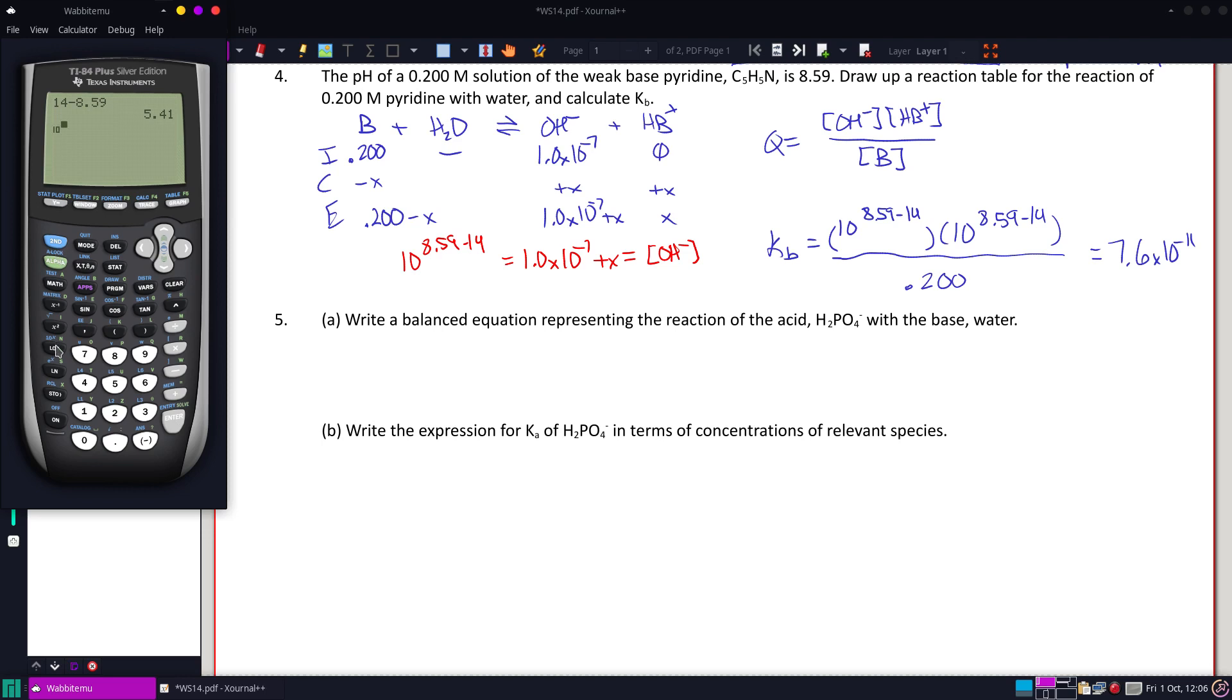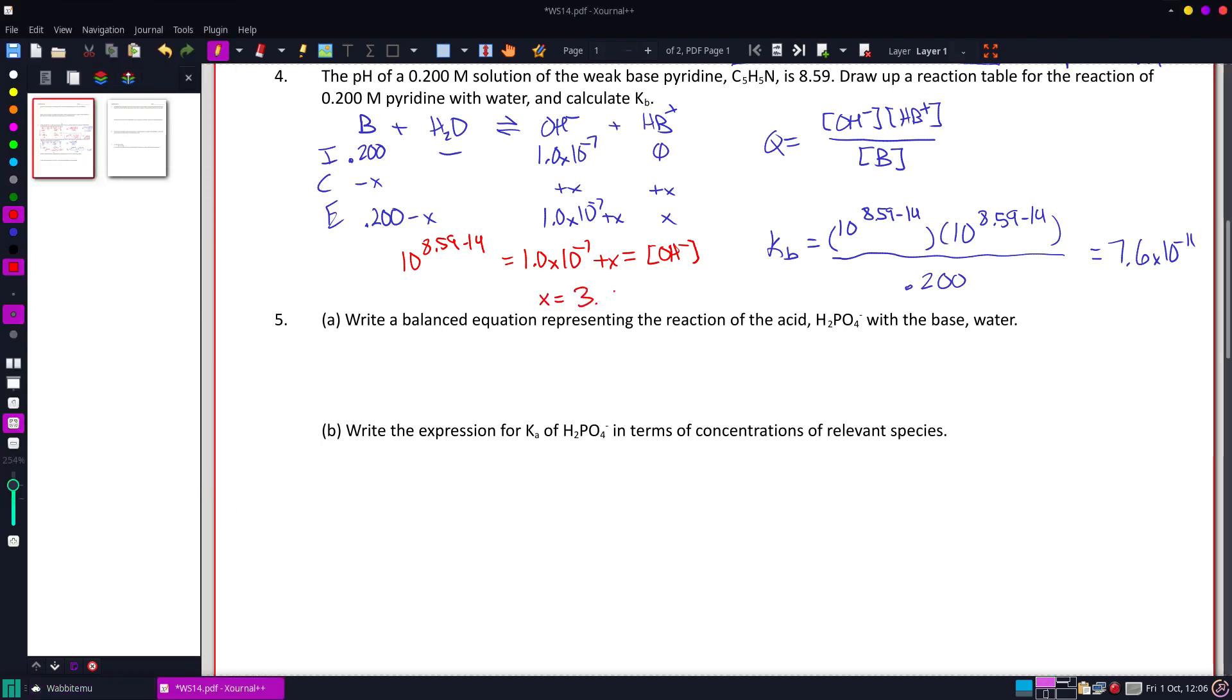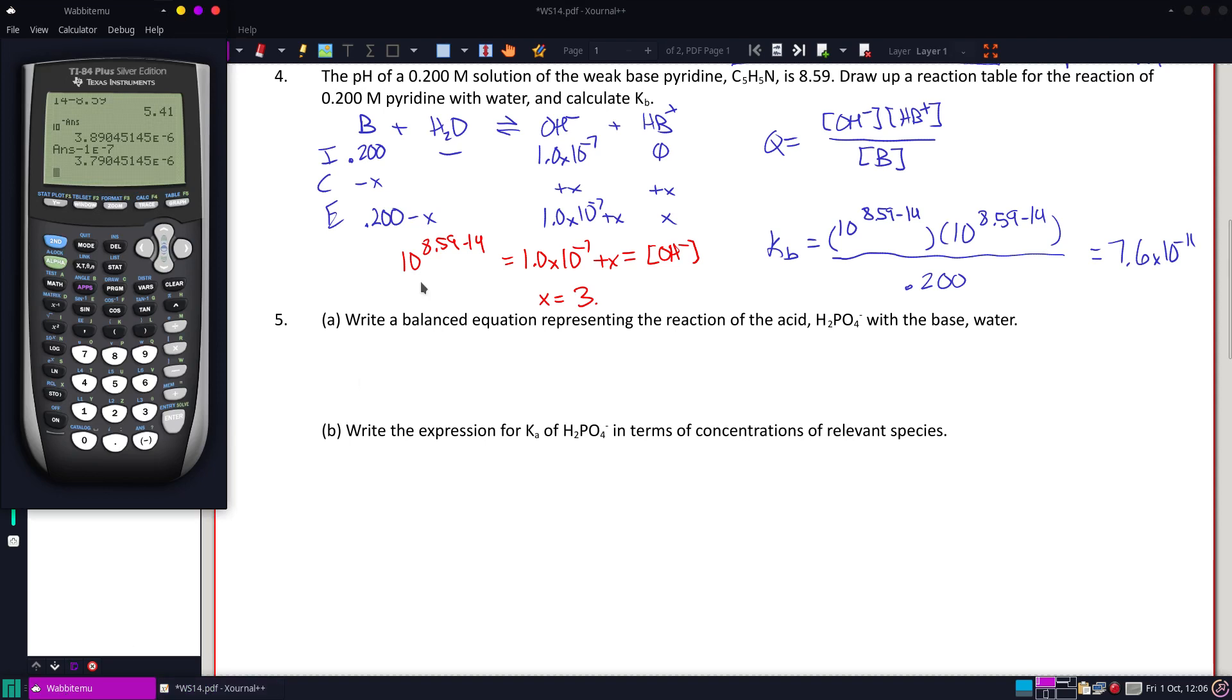And we're going to take 10 to the negative of that 5.41. This will give us the OH concentration. Now I'm going to subtract the amount of OH that was in the neutral water, so 1 times 10 to the negative 7th. And I get very small change, but my x is 3.79 times 10 to the negative 6. What did I say, 3.79? 7.9.